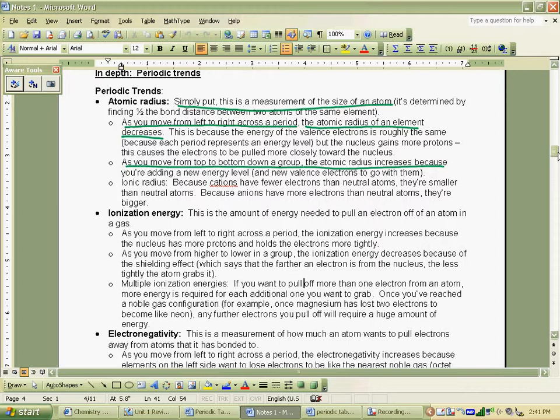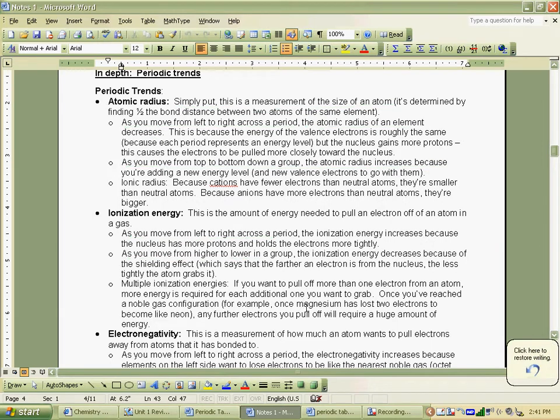And ionization energy, you're going to have as you move from left to right, and you're going to have as you move higher to lower in a group. So you've got the answer. And same for electronegativity. So there's your hint to find that. It was just provided in the notes for you.